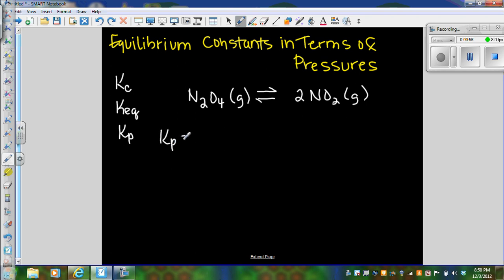So Kp, when we write the expression, is equal to the pressure of nitrogen dioxide squared because it has a coefficient of two, divided by the pressure of dinitrogen tetroxide. And that does not have a power because this has a coefficient of one.